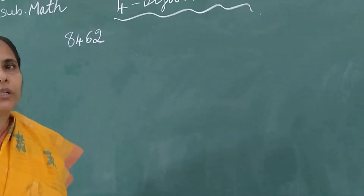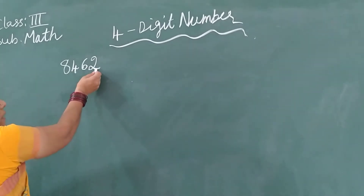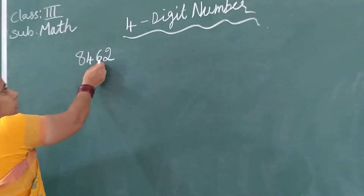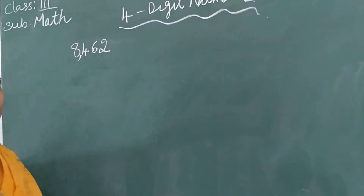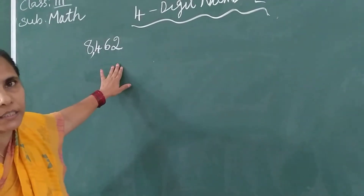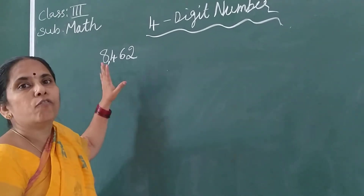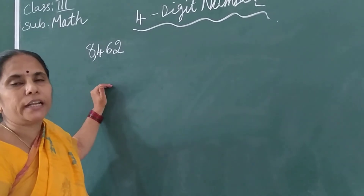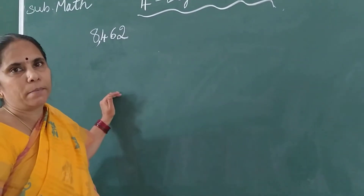So where must you put the comma? That also you must know. Where you must put the comma means: after 3 digits from the right side — you start from the right: 1s, 10s, and 100s — after those 3 digits, you will put the comma. First you must know how to write a 4-digit number, and after that I will tell you how to read it.